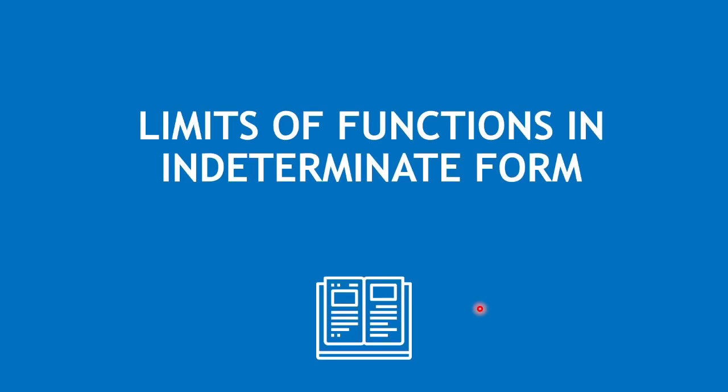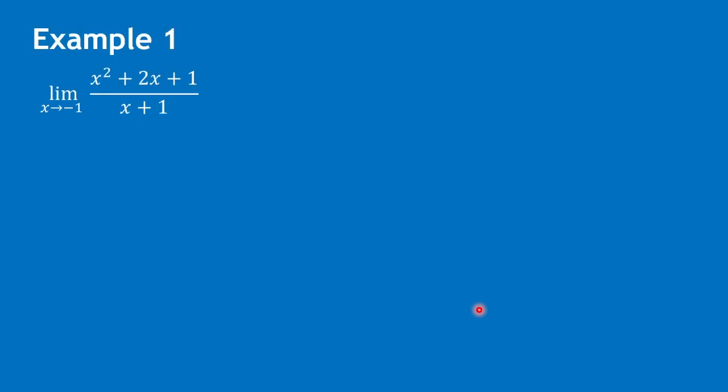This video shows examples of limits of functions in an indeterminate form using factoring and rationalizing. For example 1, let's say we have the limit of x squared plus 2x plus 1 over x plus 1 as x approaches negative 1.